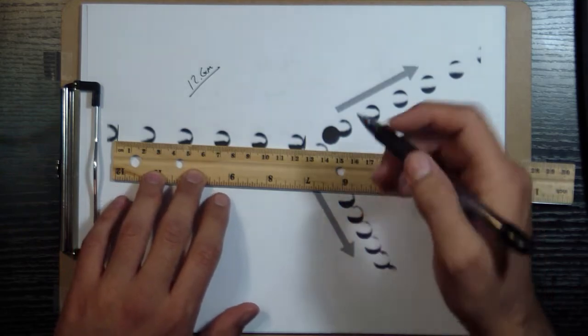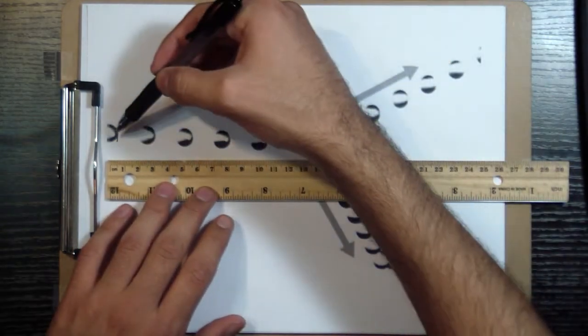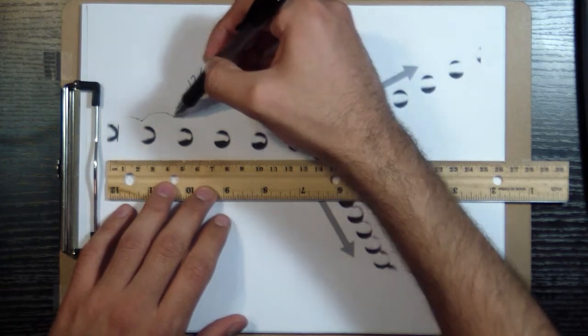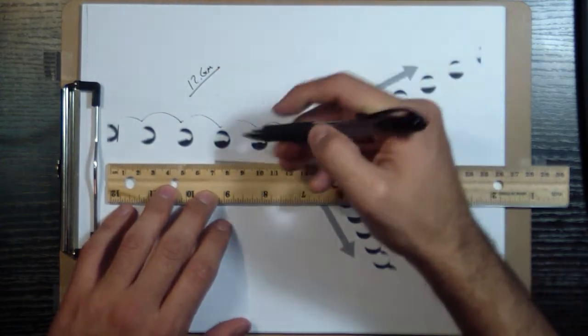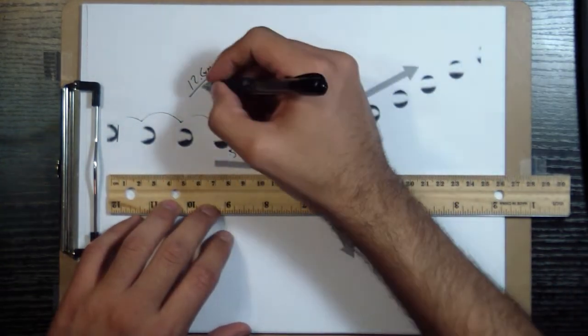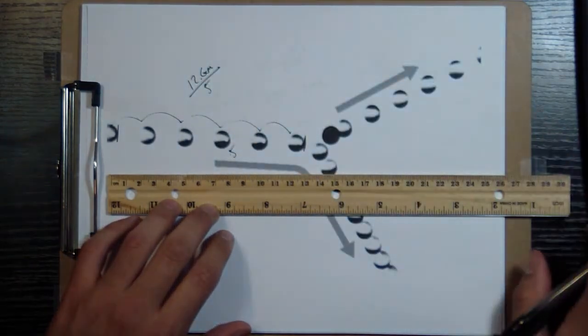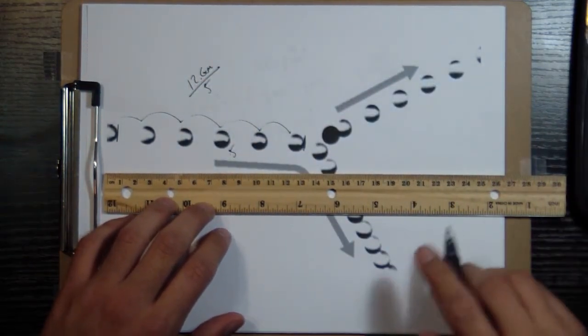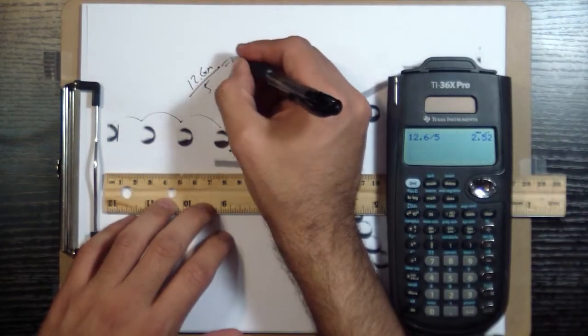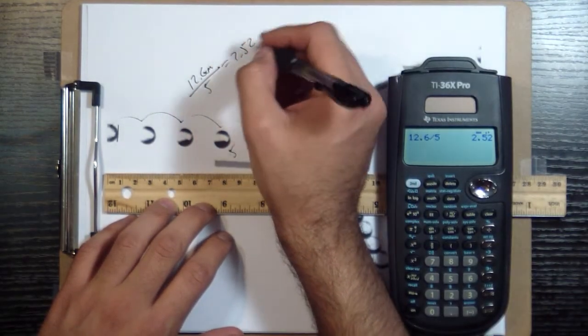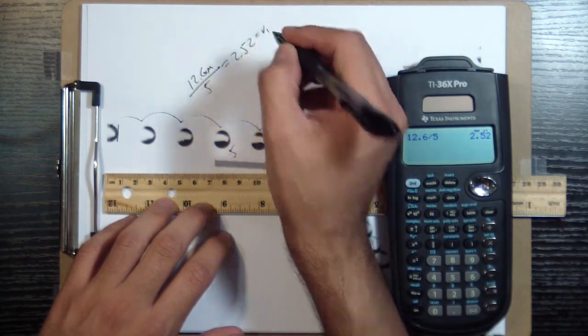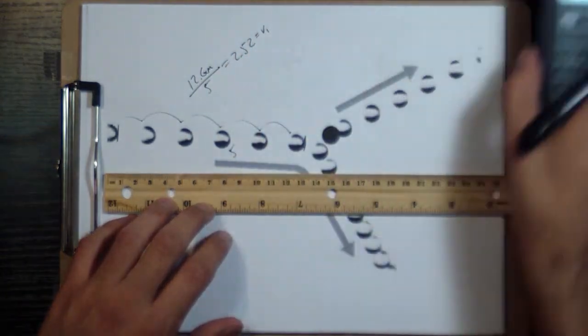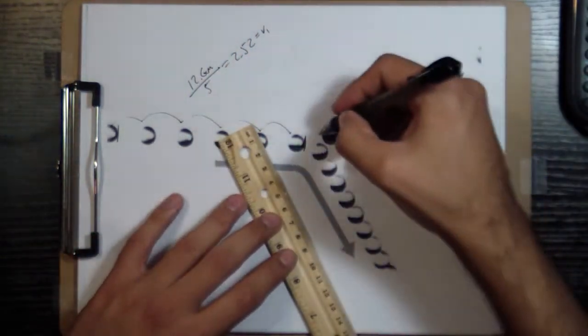And then I'm going to count how many there are. So there's 1, 2, 3, 4, 5 units of time have elapsed. So I divide 12.6 by 5, and I get 12.6 divided by 5, 2.52. And that's going to be my speed. I won't write the units because I don't really know what the units are.